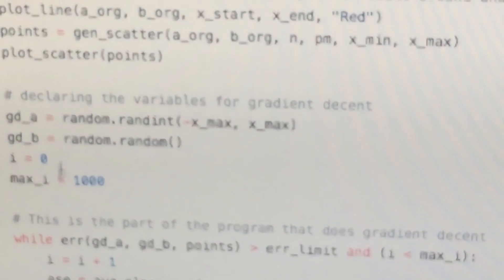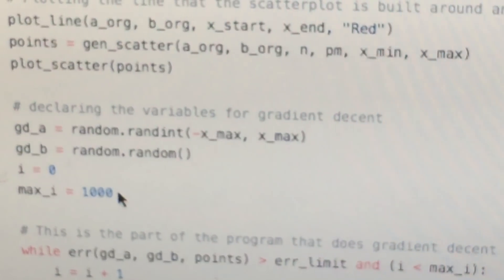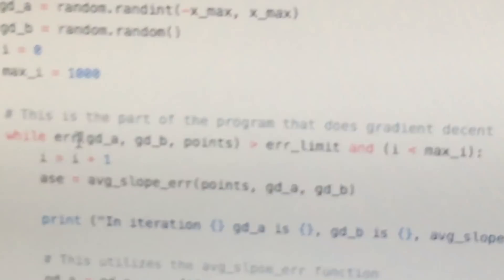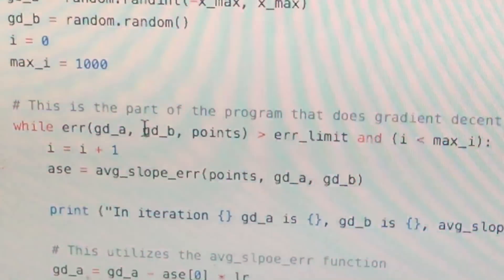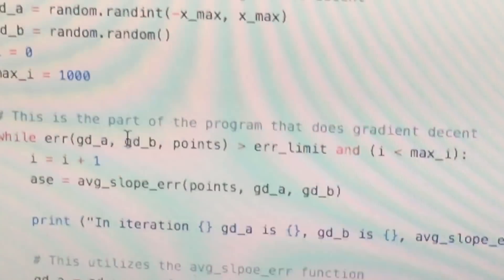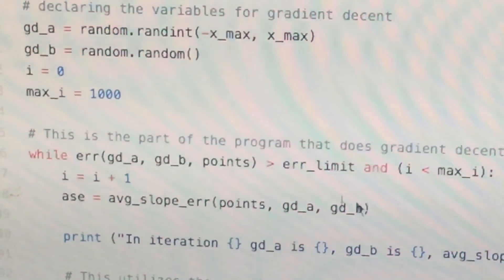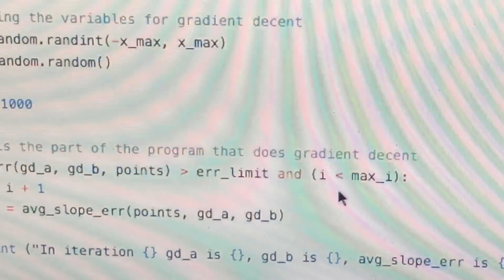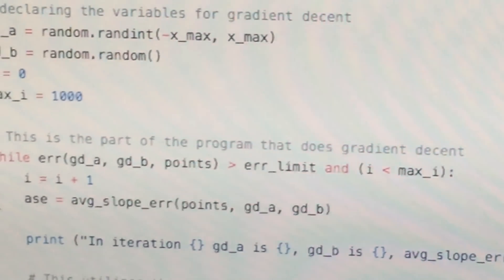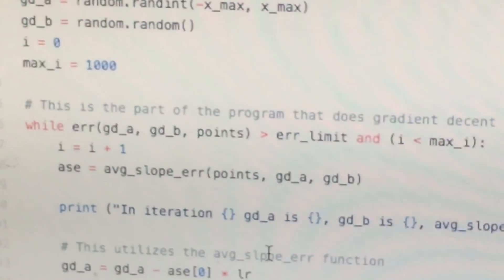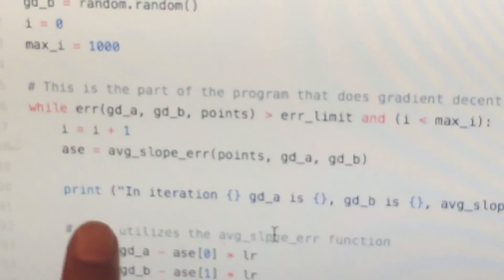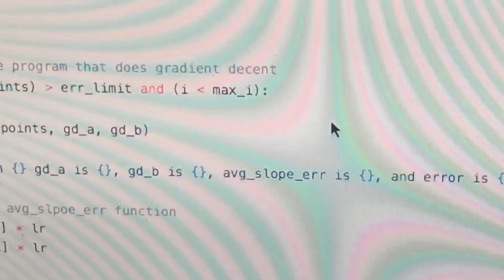So while error of gd_a and gd_b and points - while the error of gd_a and gd_b is greater than your error limit and i is less than max_i, then you will keep on doing it. So first thing, i equals i plus one, and then ase is average slope error. And then print, this is just something that you can look at for information in the terminal.